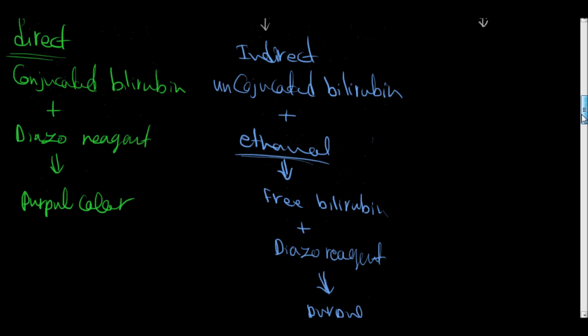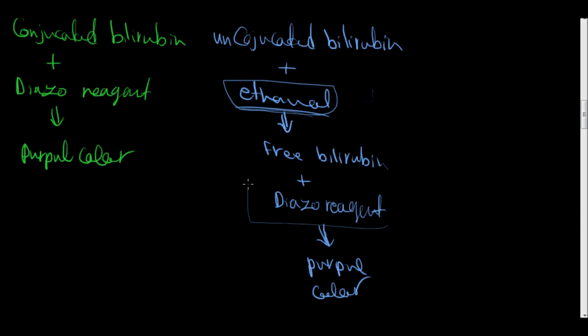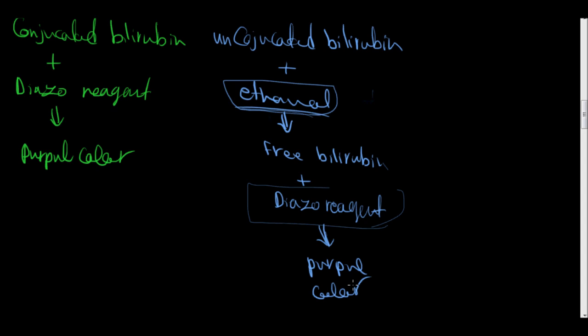For that reason, it is called indirect because first we must add ethanol, then we must add the diazo reagent in order to have the color change.